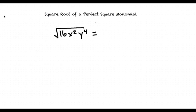Oh, okay. That makes more sense now. How do we find the square root of a perfect square monomial, then? The square root of a perfect square monomial is the product of the square root of each term. Let's do an example.